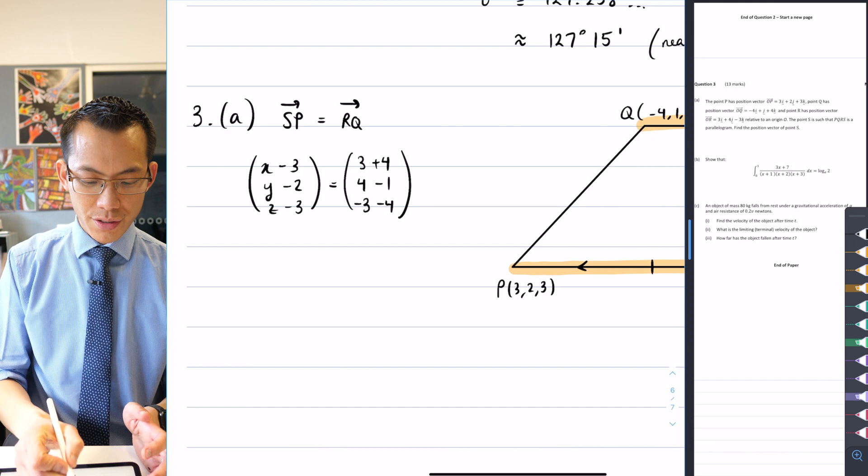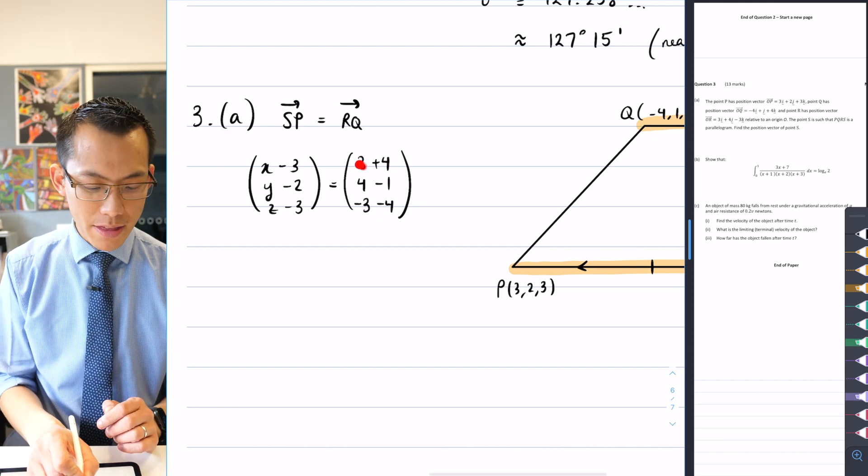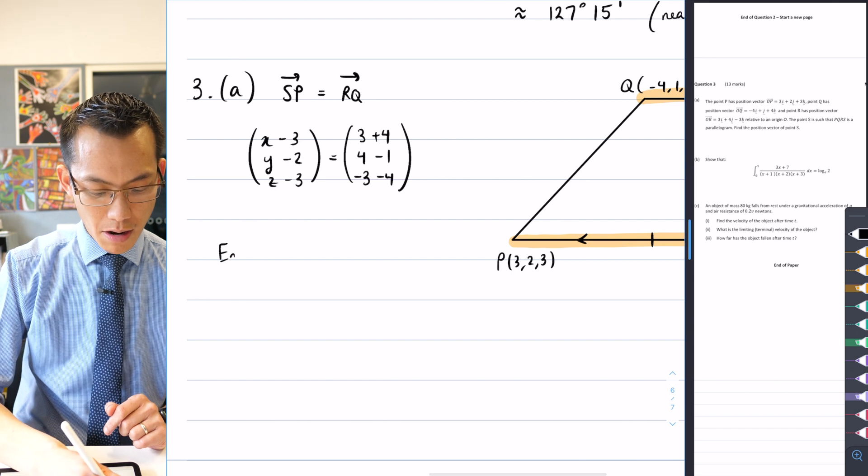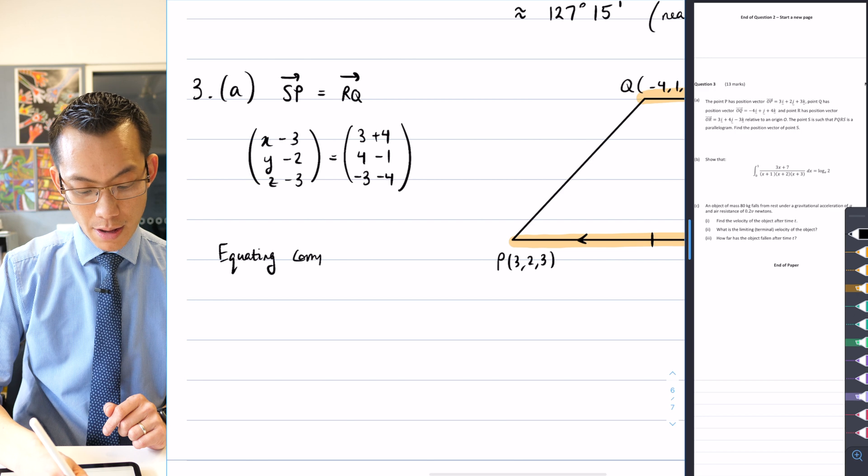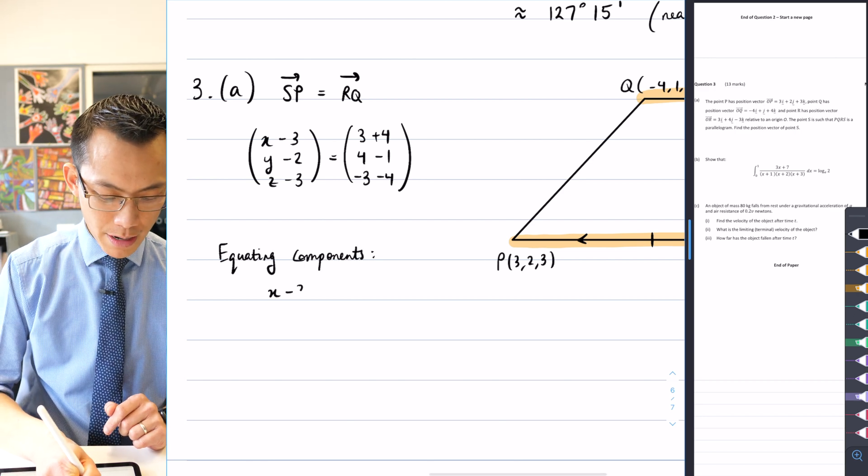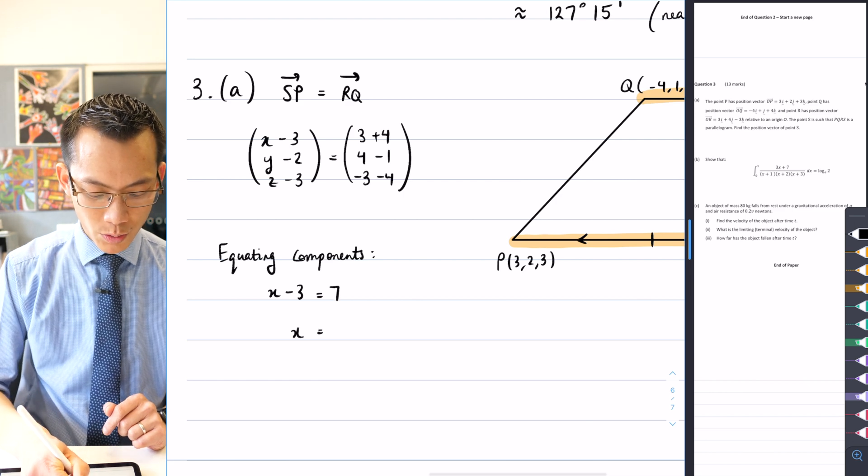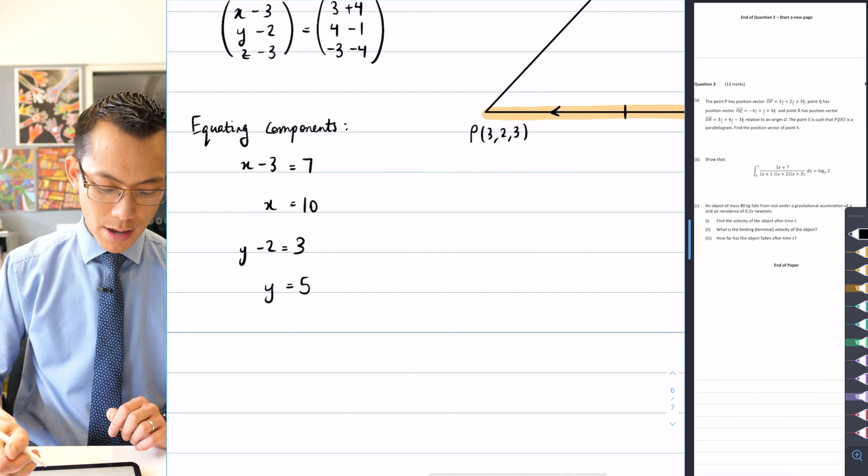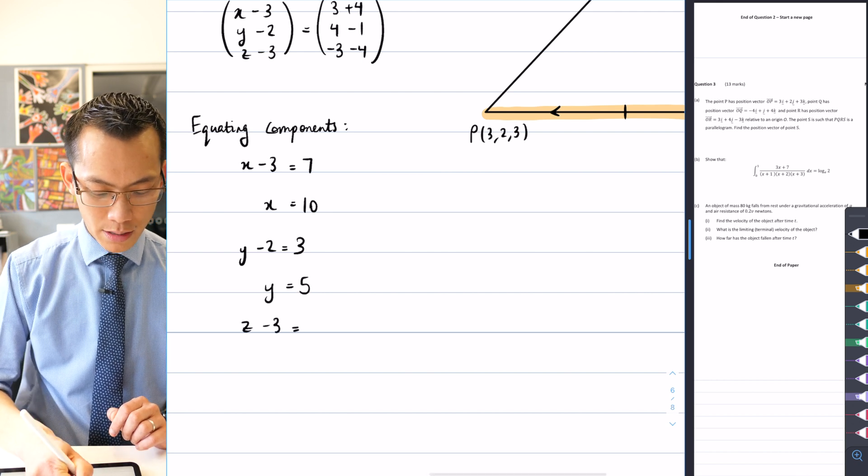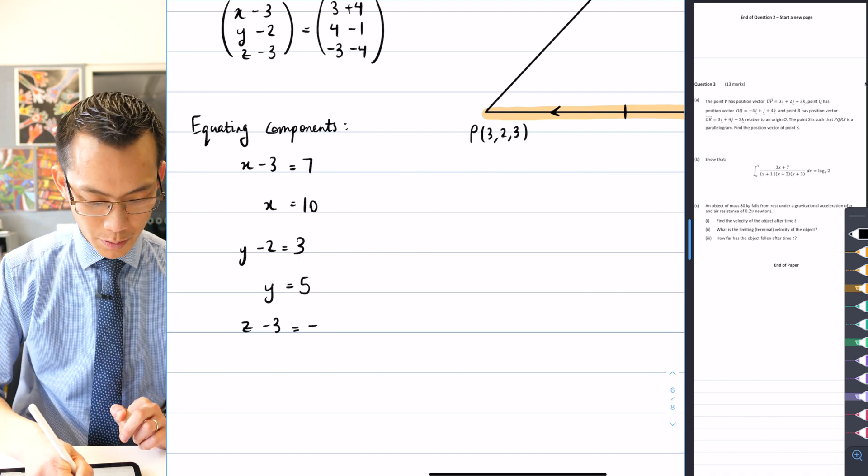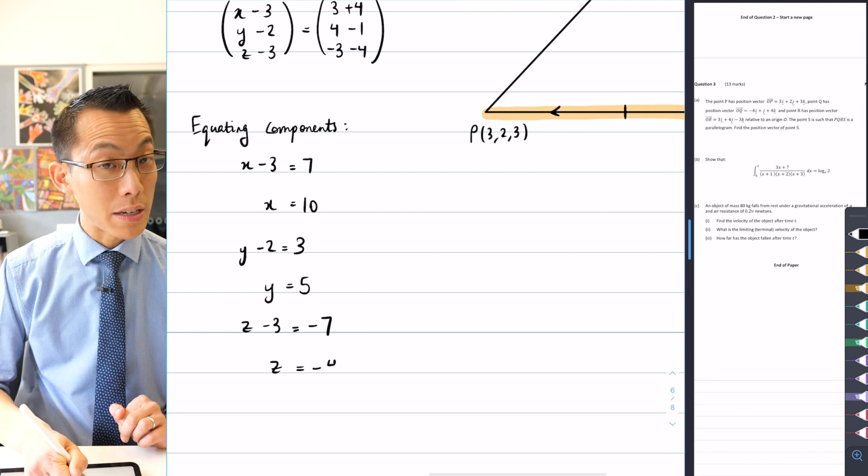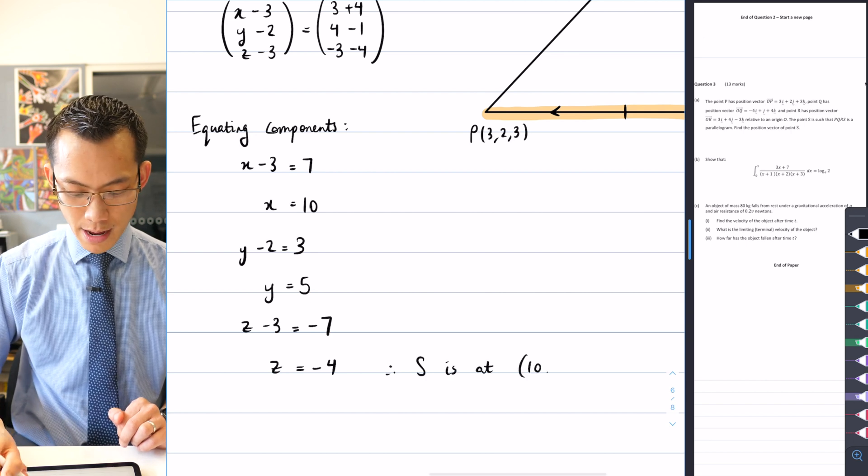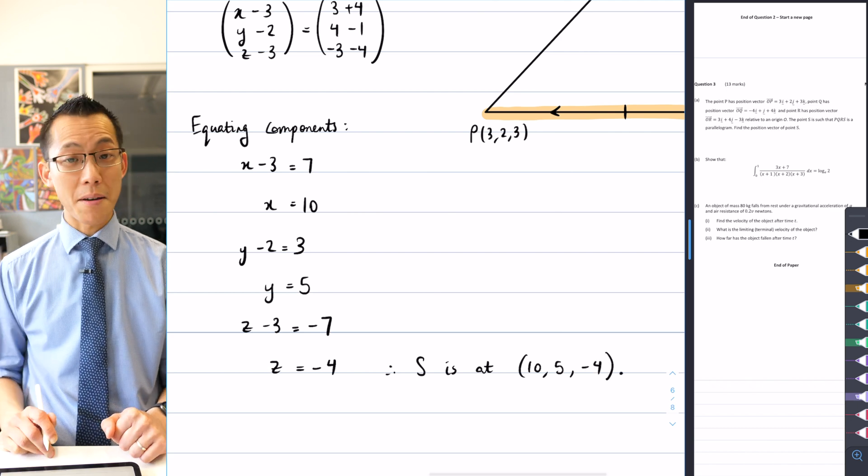And you can see here, I can just, number one, simplify all of these, the arithmetic's very simple, and then I can equate the X's, equate the Y's, equate the Z's, and I'm done. So I'm going to say equating components. X minus three is equal to seven, so therefore X equals ten. Y minus two is going to be three, so Y is going to be five. And then Z take away three is going to be negative seven, so I'm going to add three to both sides, which gives me negative four. So therefore, S is at ten, five, negative four. Finished. These in fact should have been some of the easiest three marks in the entire paper.